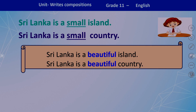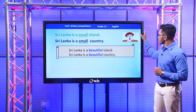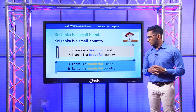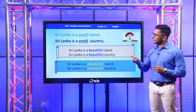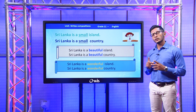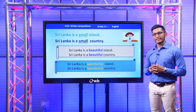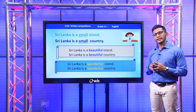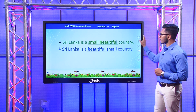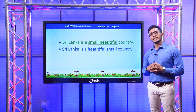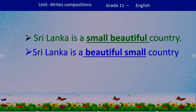Sri Lanka is a beautiful island, or you can also say Sri Lanka is a beautiful country. I have used the word 'wonderful' as well: Sri Lanka is a wonderful island, or Sri Lanka is a wonderful country. Now I have a question for you — can't we use these two adjectives, 'small' and 'beautiful,' in one sentence? Of course we can. Take a few seconds and try to write a complete sentence using these two adjectives. I have written two sentences: Sri Lanka is a small beautiful country, and Sri Lanka is a beautiful small country. What do you think is the correct one?